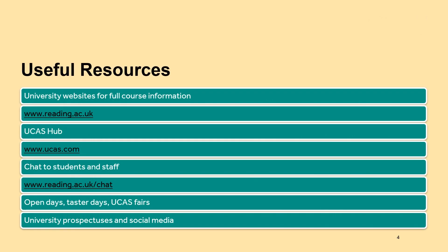Here are some useful resources. You can check university websites directly for full course information — it's really important that you choose courses you are genuinely excited to study, and you can check exactly what modules and content they offer. The University of Reading website is www.reading.ac.uk. The UCAS Hub is of course where you make your application and sign up, but you can also use it as a research tool as it has excellent information about universities, courses, student finance and more.